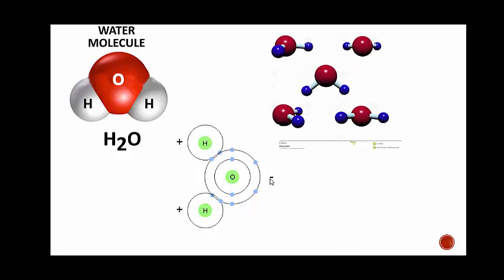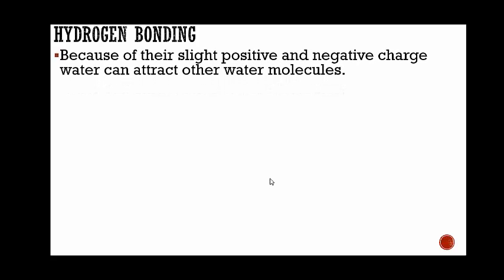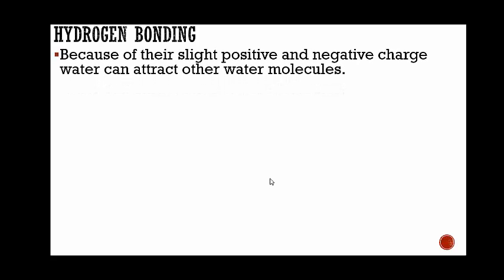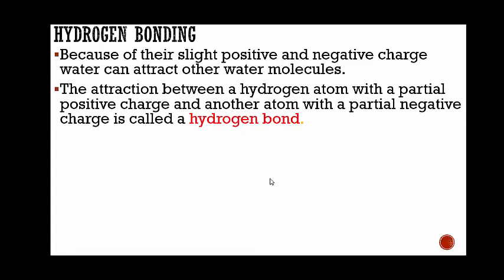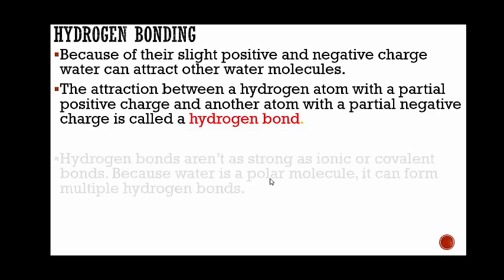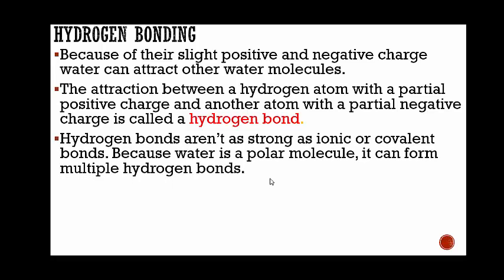Here's another example of an H2O molecule. Because of their slight positive and negative charge, water can attract other water molecules. The attraction between a hydrogen atom with a partial positive charge and another atom with a partial negative charge is called a hydrogen bond. Hydrogen bonds aren't as strong as ionic or covalent bonds.